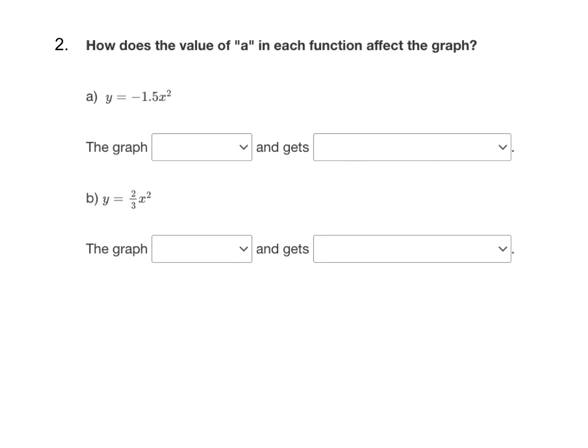Here's question two. For the first equation, we have y equals negative 1.5 x squared. Now notice because that's a negative number, right away we know the graph is going to open down. So in that first drop down, you'll choose opens down.